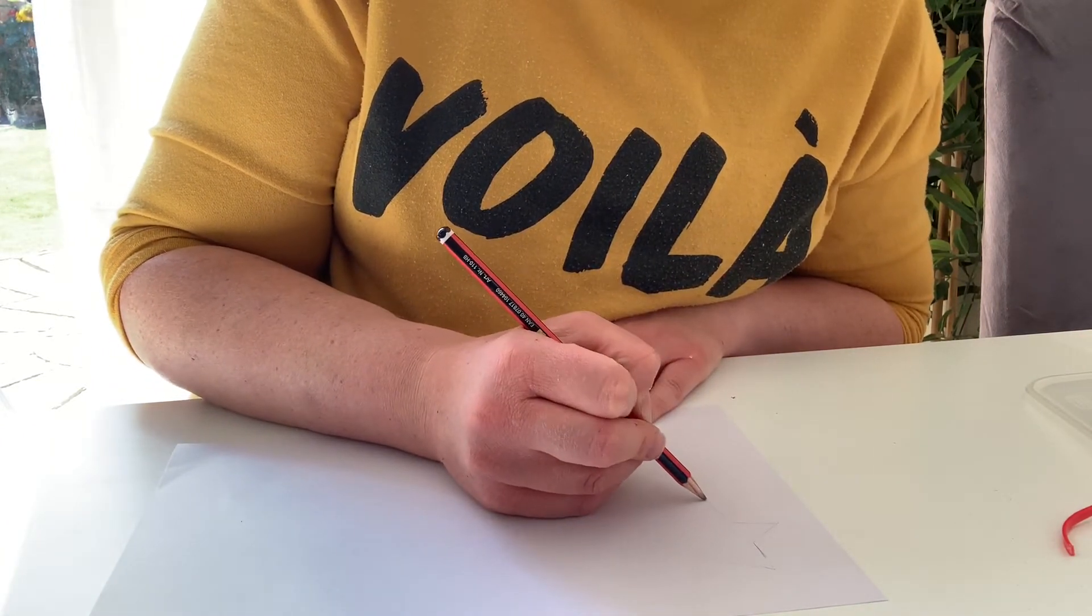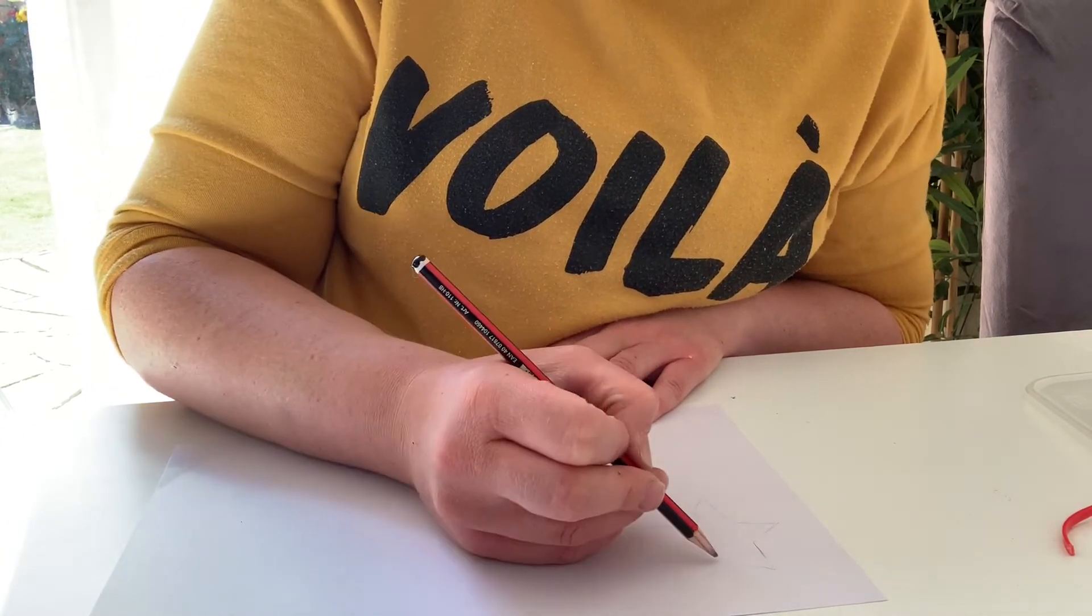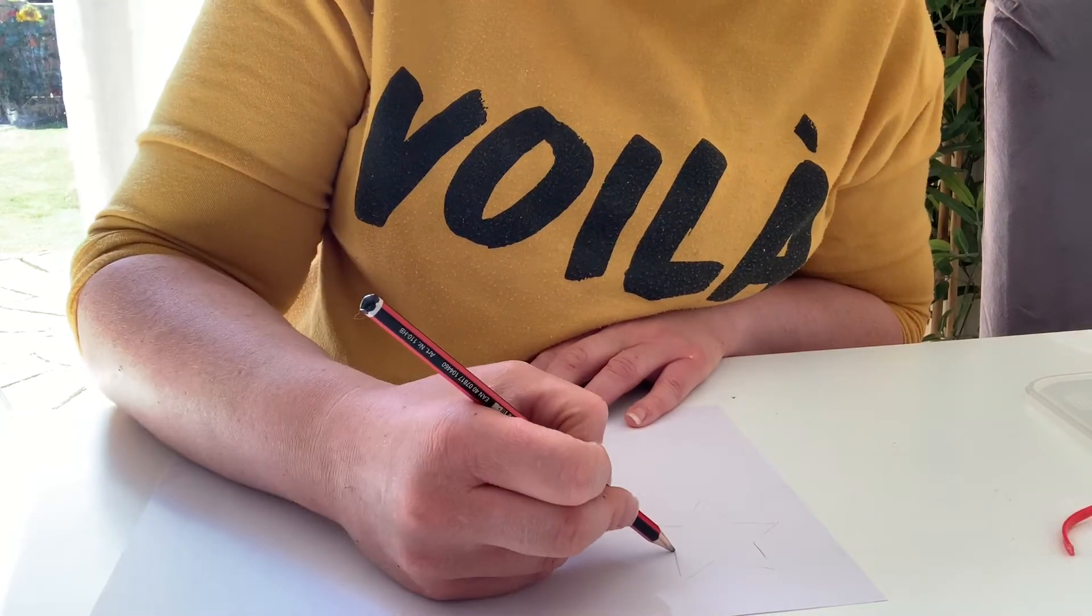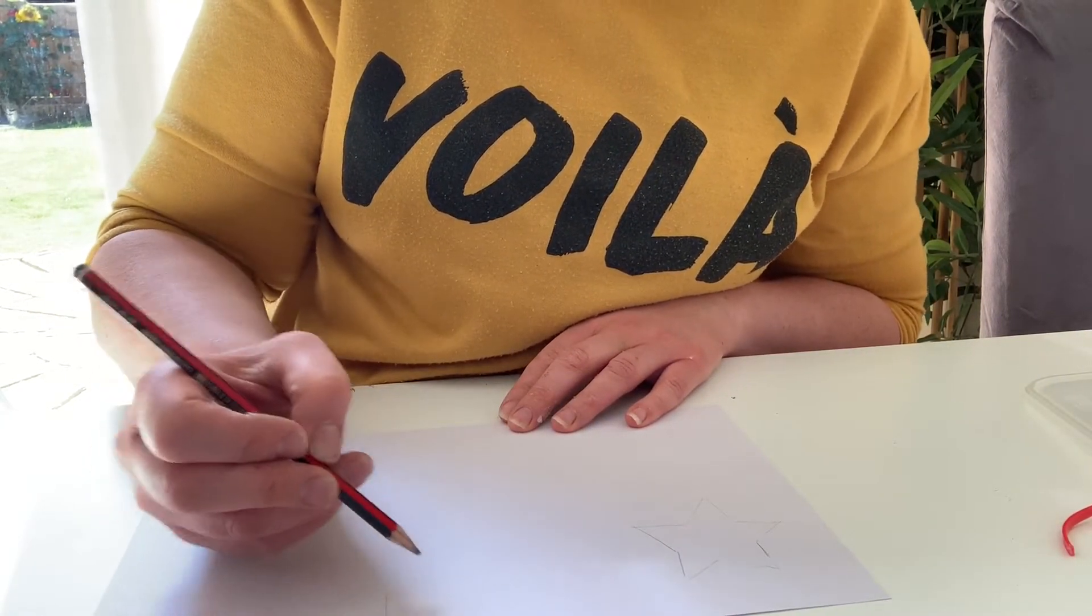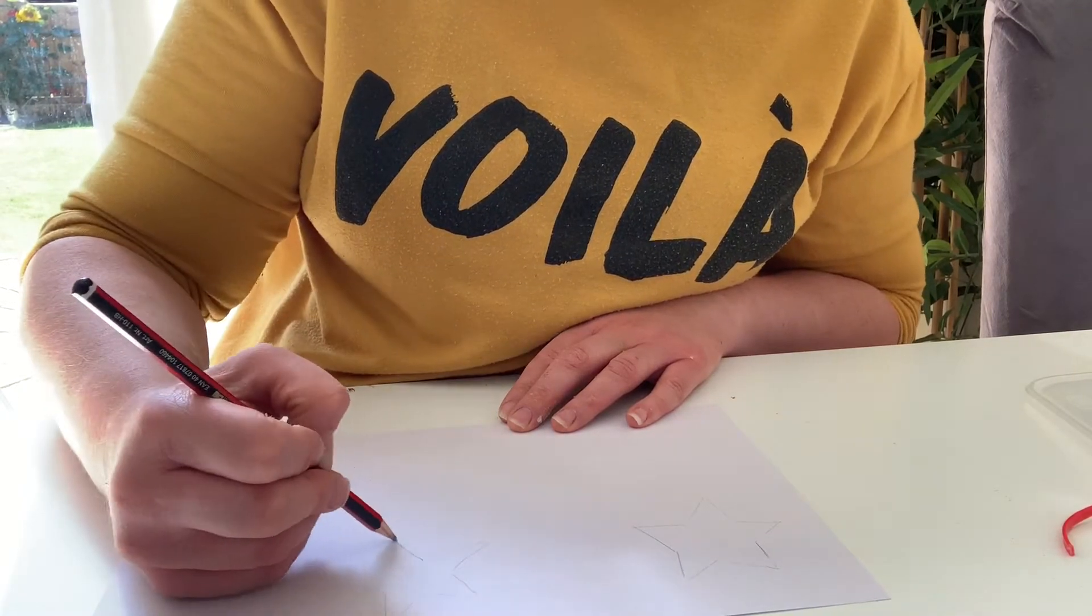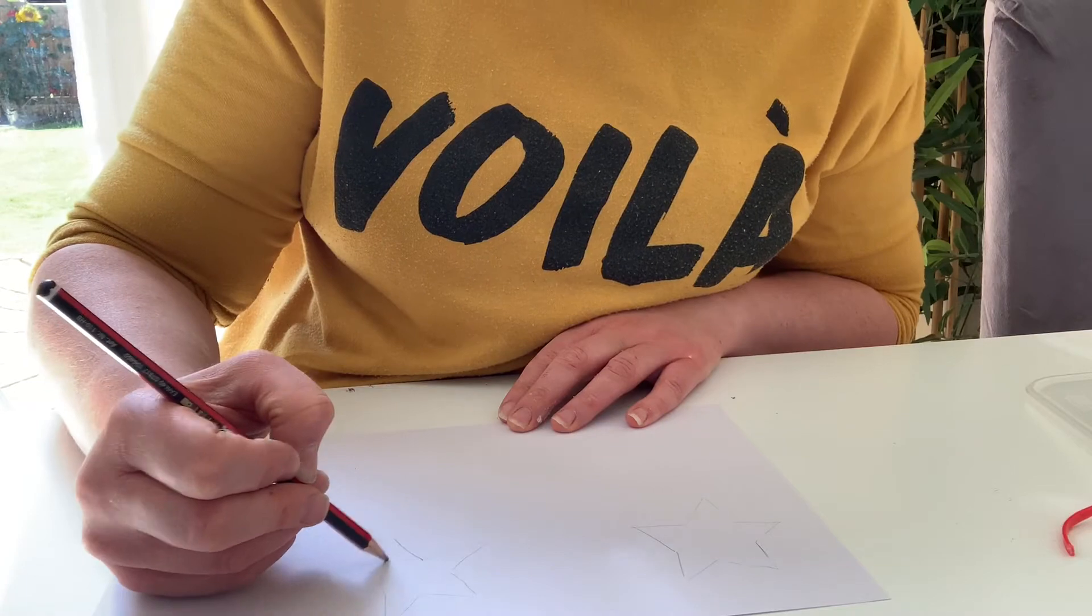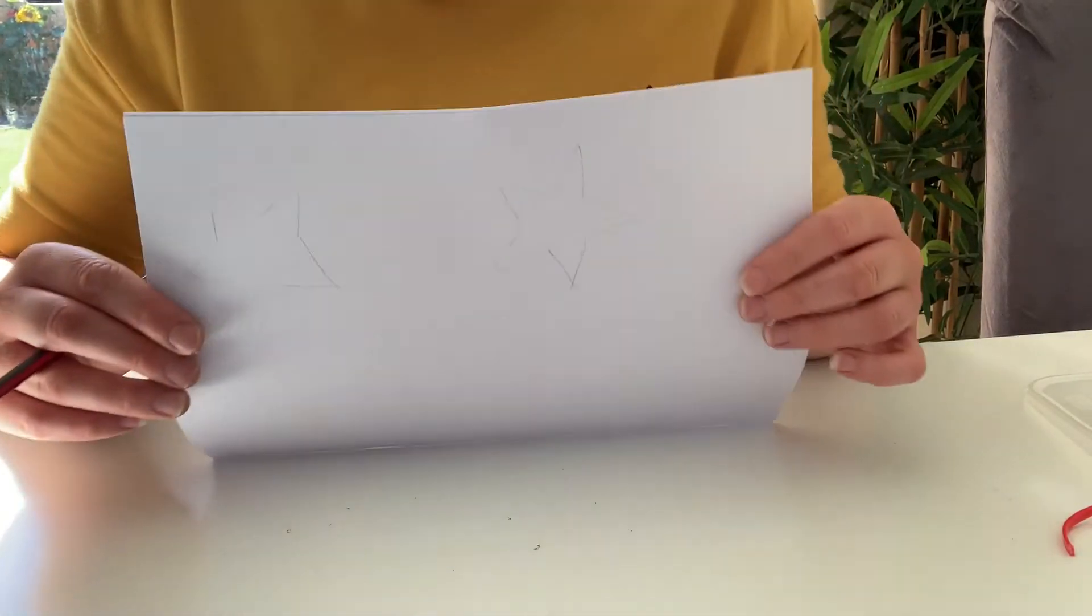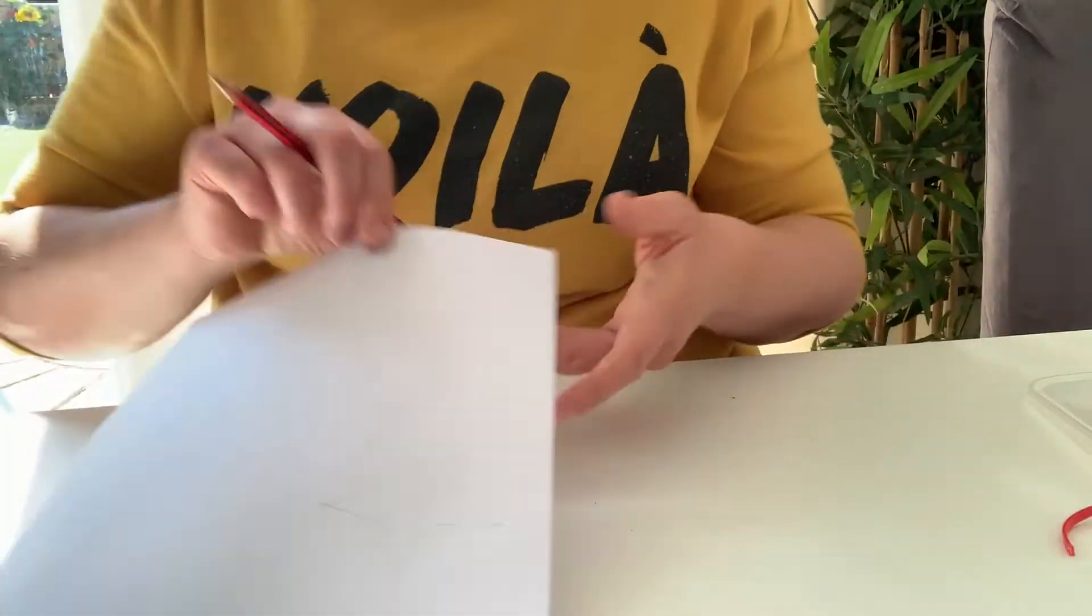So I've chosen to do stars, so I'm not pressing too hard, just press very lightly just so you can see it to put the glue on in a minute. So I'm just going to do another star over here and then I'm going to cover all of my page in some stars as well. So it looks like this so far. I'm going to carry on.